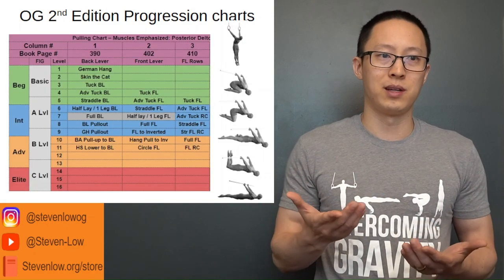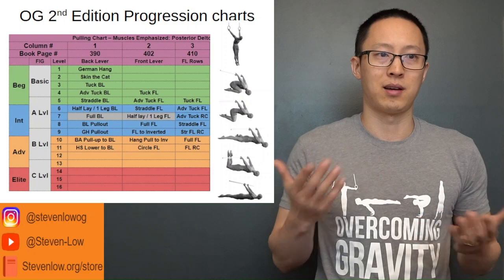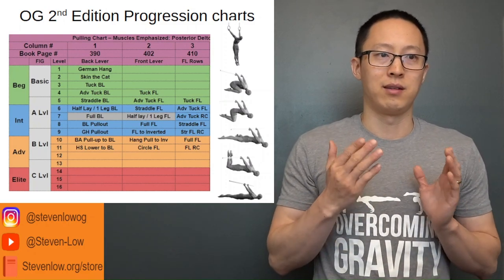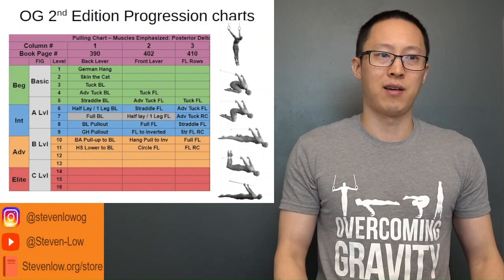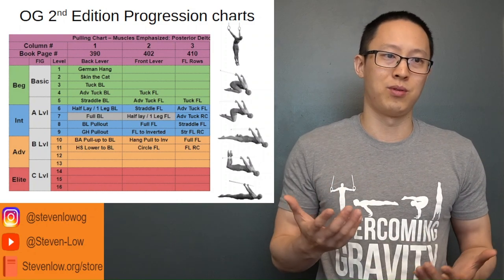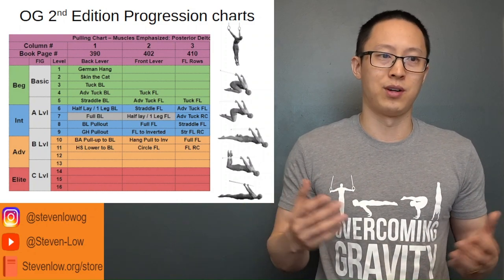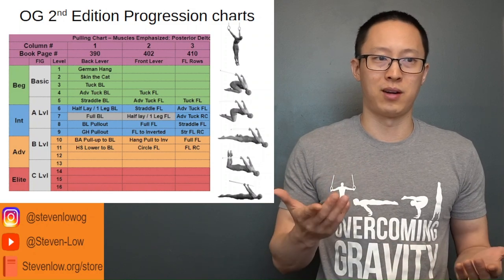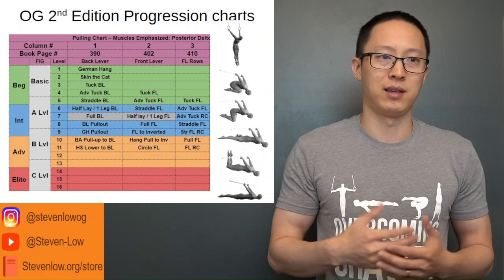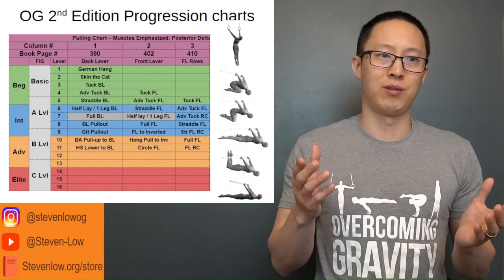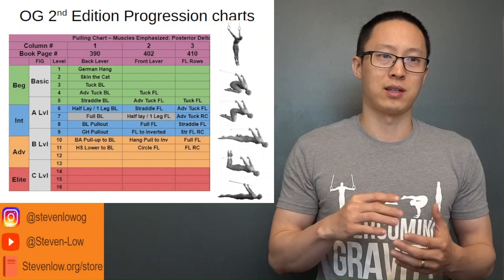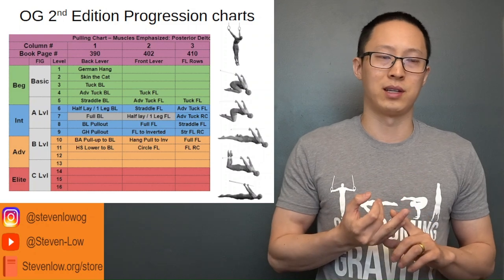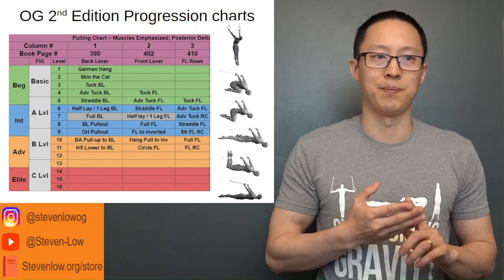This is the zoomed-in pulling chart. On the left side of the chart you have your green, blue, orange, and red for elite — so beginner, intermediate, advanced, and elite. The FIG level for these exercises is approximately your basic skills, your A-level skills, your B-level skills, and C.